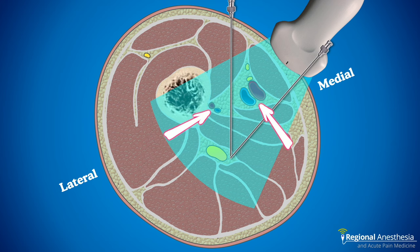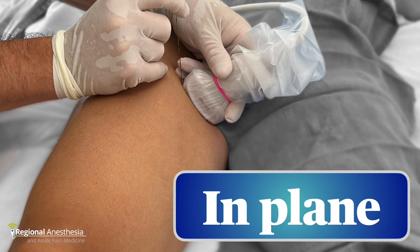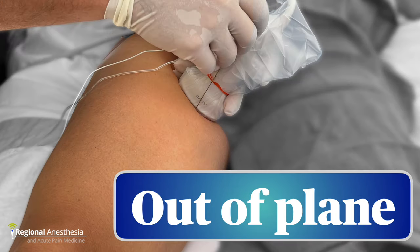Both the superficial and profunda femoral vessels can present challenges to needle trajectory, and you're sometimes forced to abandon an in-plane approach for an out-of-plane, or vice versa. Here's the probe and needle position for the in-plane approach, and here's the positioning for out-of-plane. It's useful to use a curvilinear probe for this block for both the depth and breadth of field it affords.